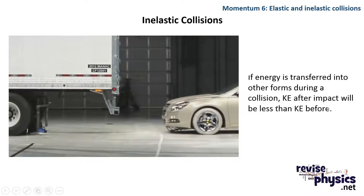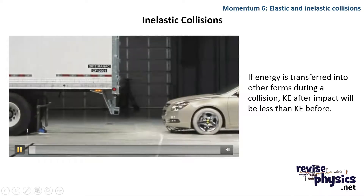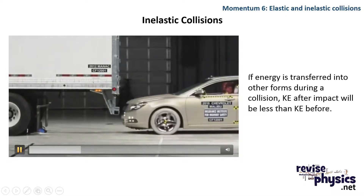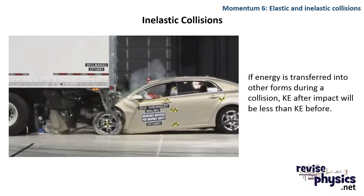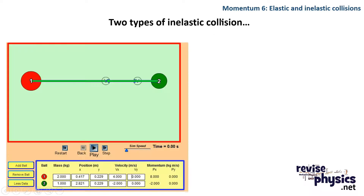However, most collisions are not elastic. For instance, if a car goes into the back of a lorry, it's designed so the crumple zones give in, dissipating energy — you can see the lorry hardly moved. While momentum might have been conserved, kinetic energy definitely wasn't. There are two types of inelastic collision.